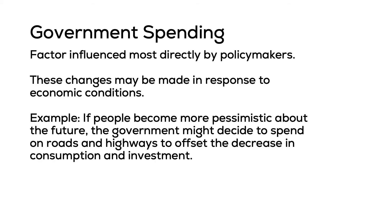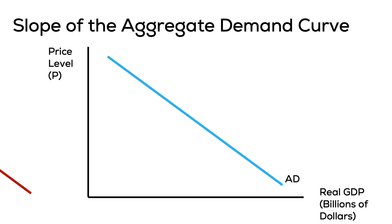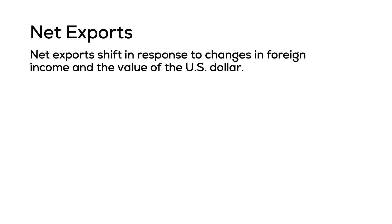Government spending is influenced directly by policy makers. These changes may be due to responses to economic conditions or they might be political in nature. For now, we're going to assume government spending increases or decreases without getting into the details of what might cause that change — later this semester we'll discuss economic factors that impact government spending. An increase in government spending will lead to a shift to the right of AD, and a decrease in government spending will lead to a decrease in AD.